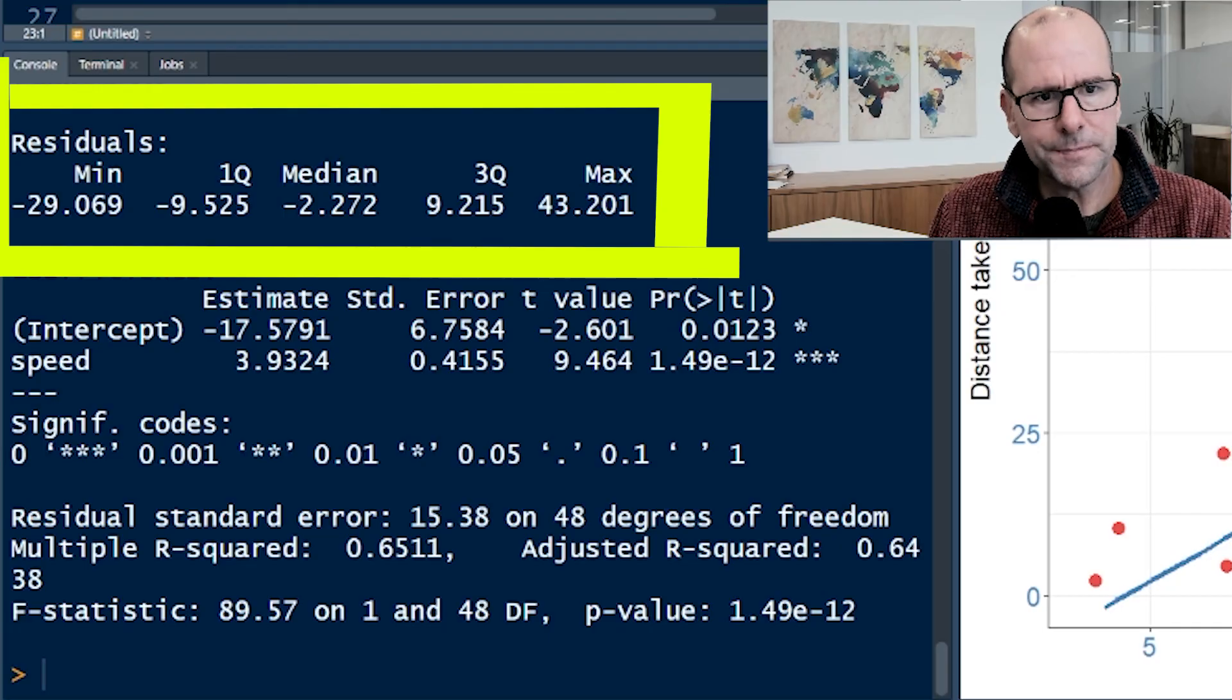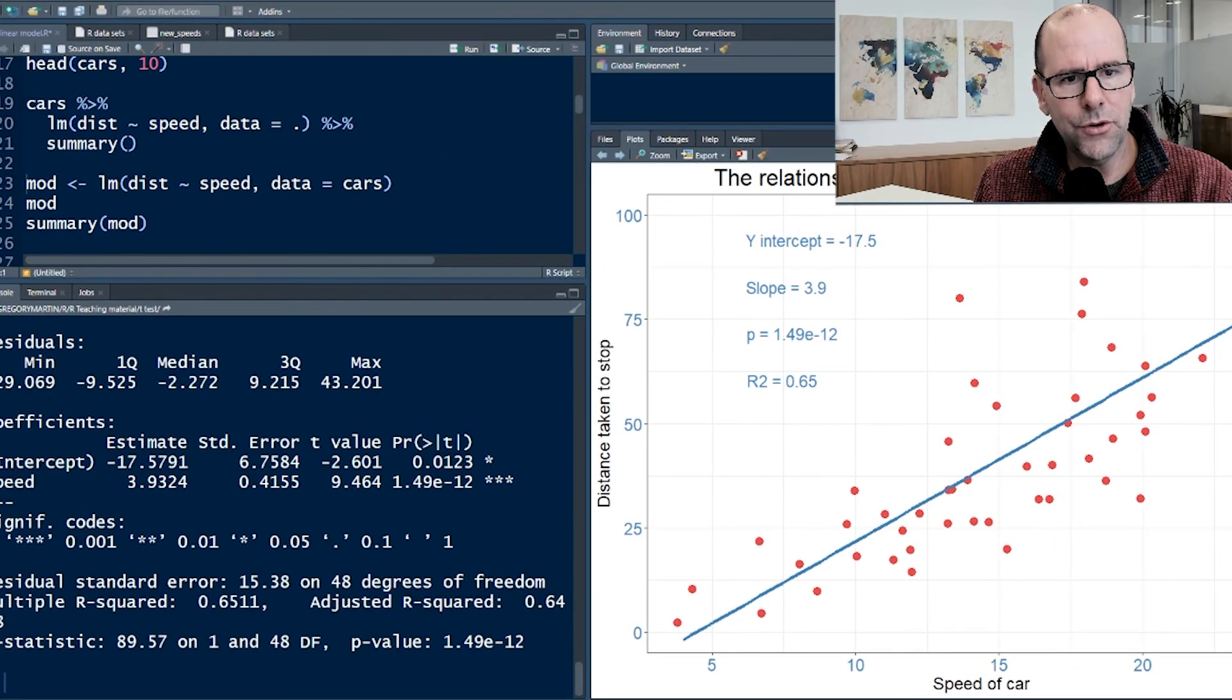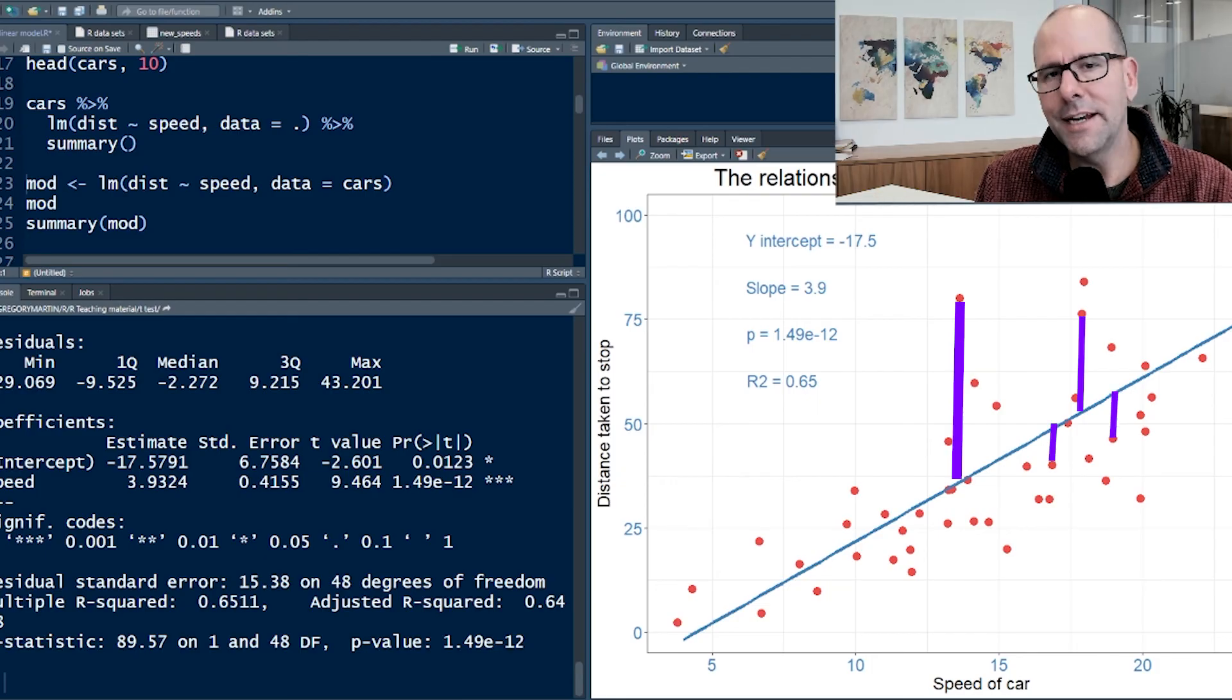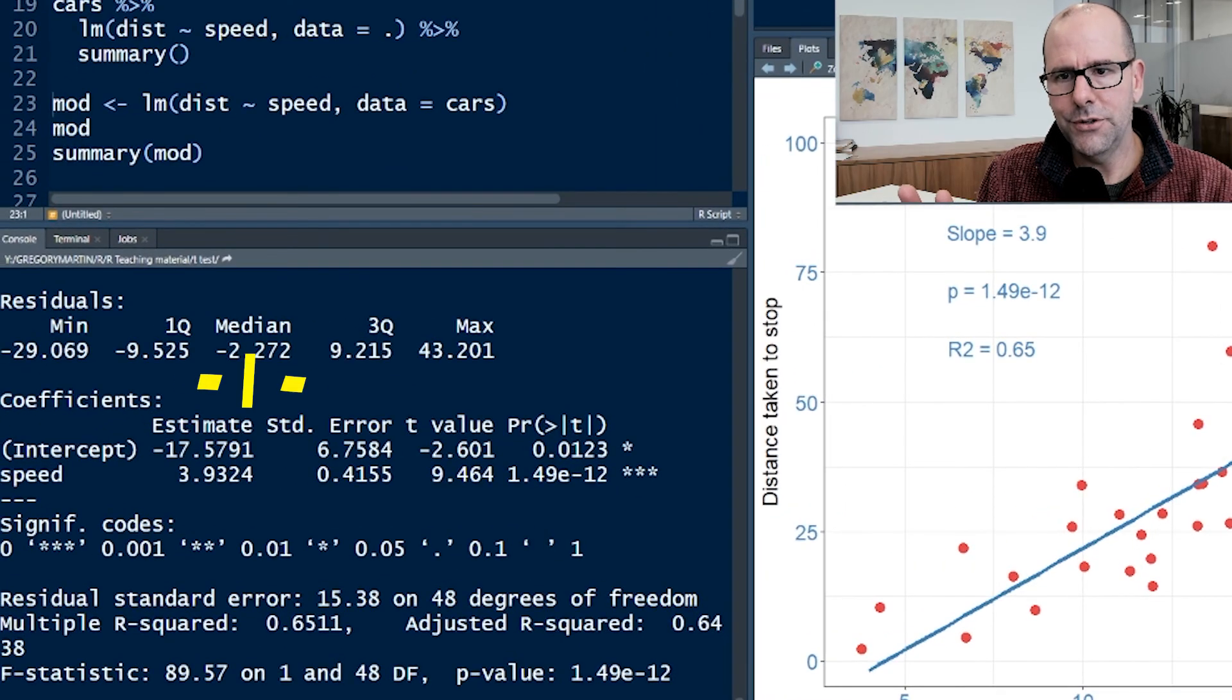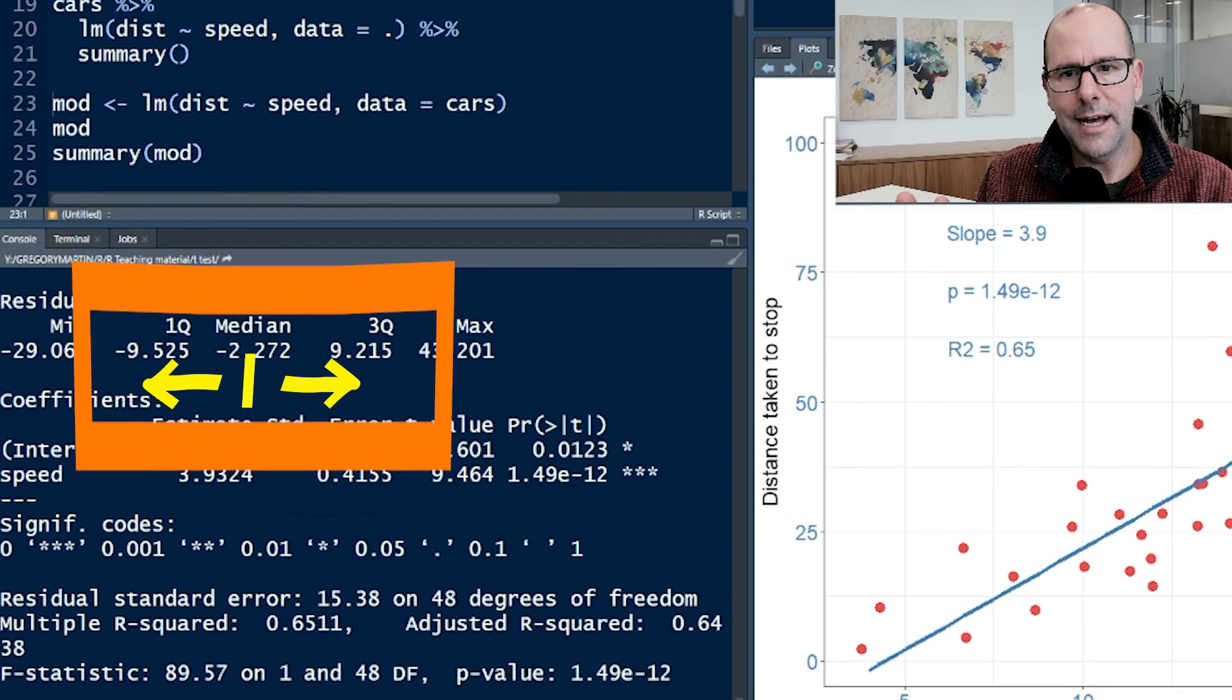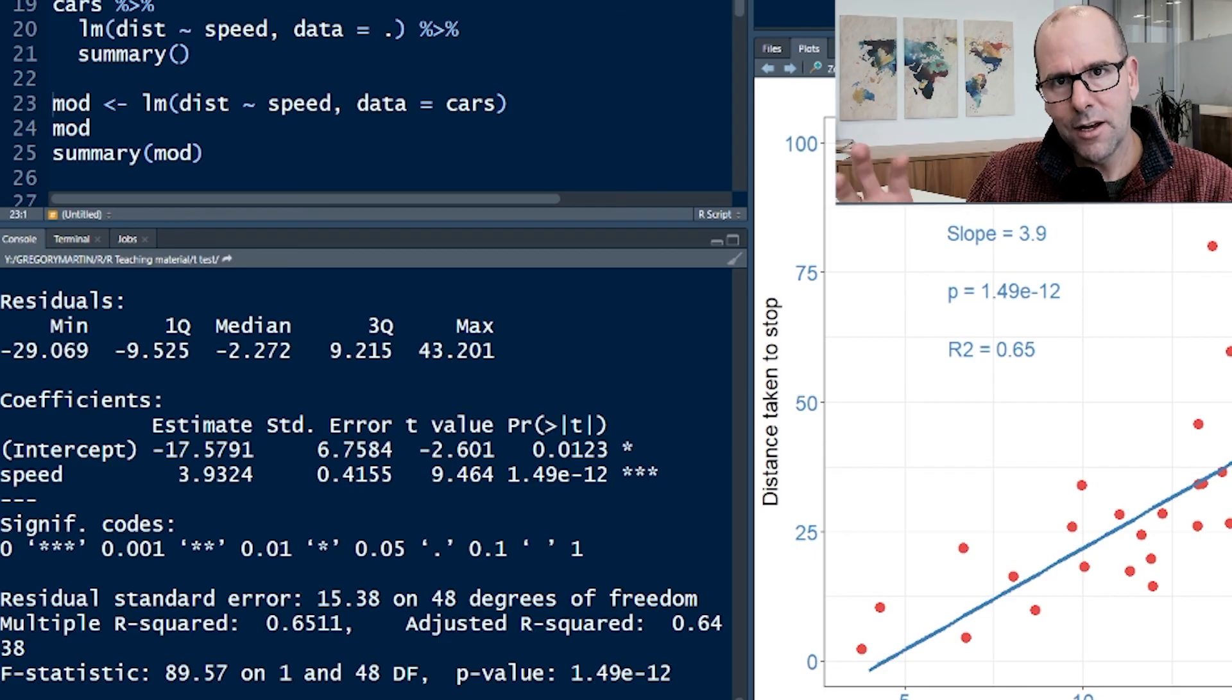These residuals - what are the residuals? It's quite clear that not all of the values lie exactly on the model. For each observation, there is a distance between that observation and what the model suggests that observation should be if it fitted perfectly. That difference is the residual. We expect the residuals to be symmetrically distributed around zero. If you look at the interquartile range, it's sort of nine on either side. You would check this quite carefully if you were to place any weight on the model.